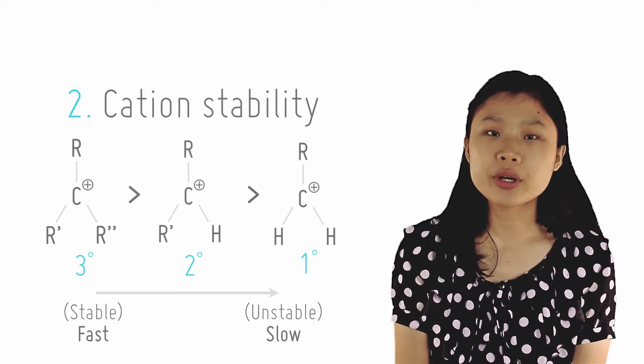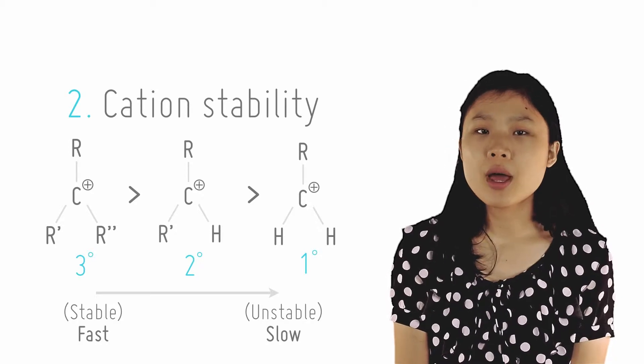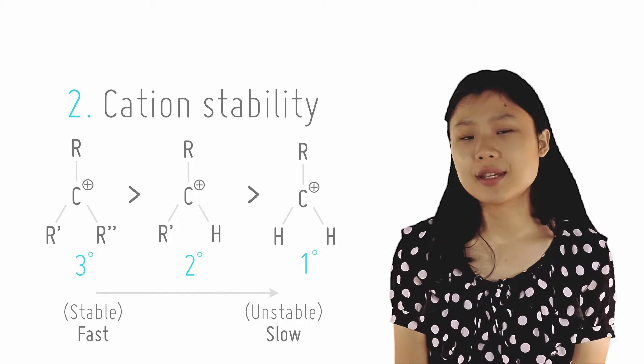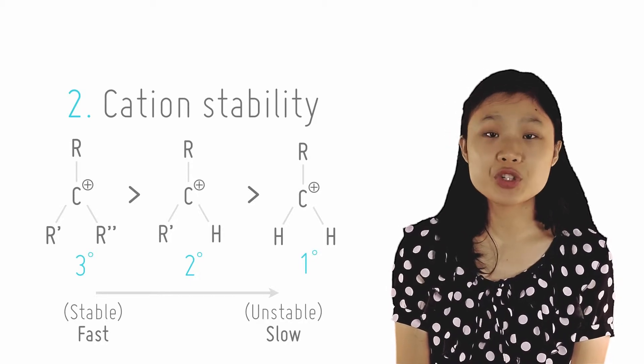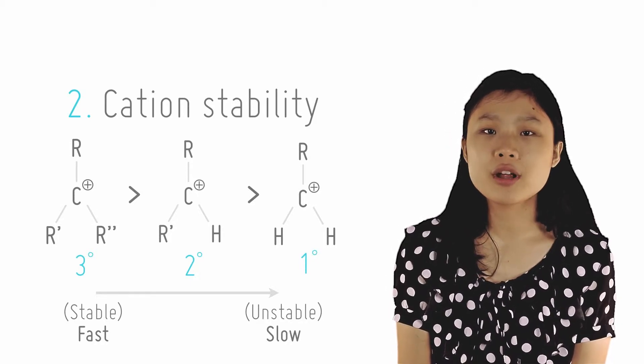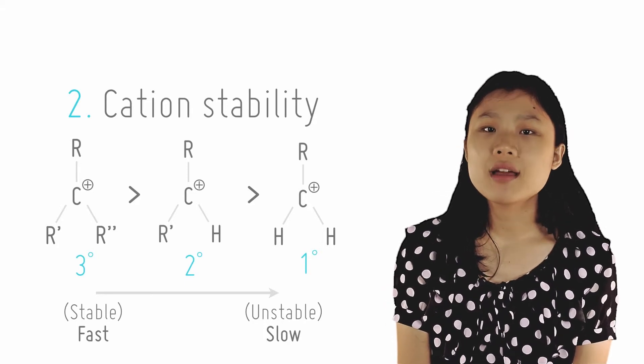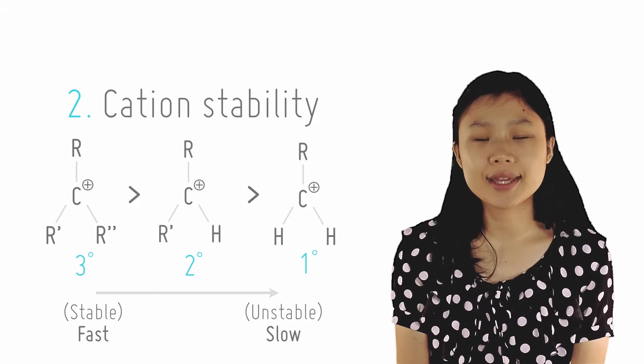Similarly, electron withdrawing groups will destabilize the carbocation by making the positive charge more intense. Generally speaking, tertiary carbocations and tertiary haloalkanes are most reactive in the SN1 mechanism, followed by secondary haloalkanes and then primary haloalkanes.